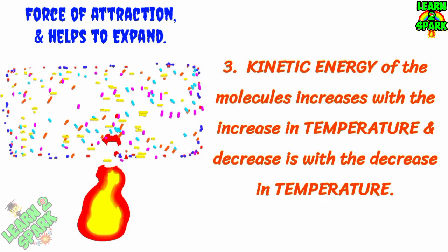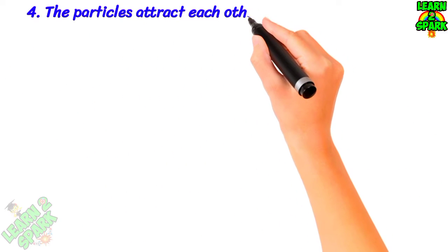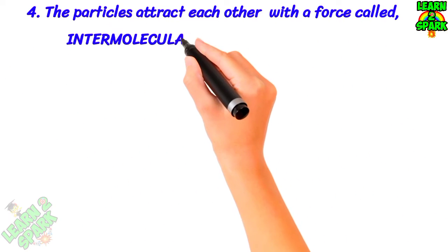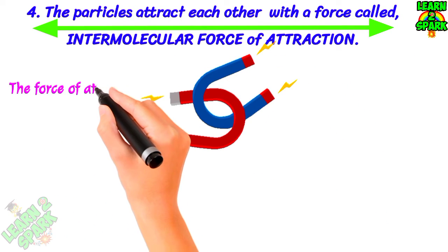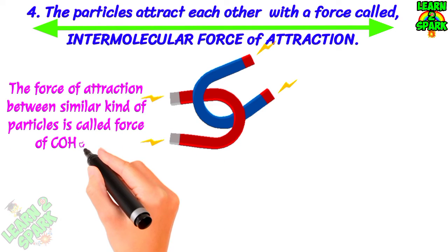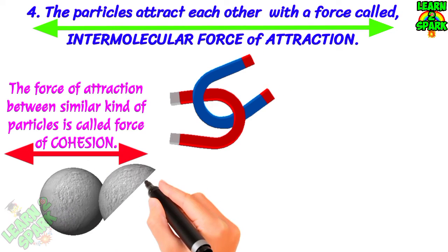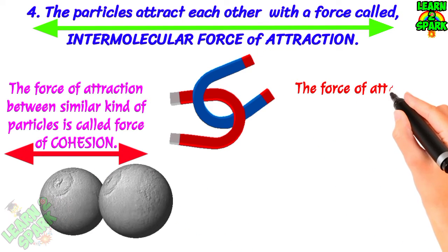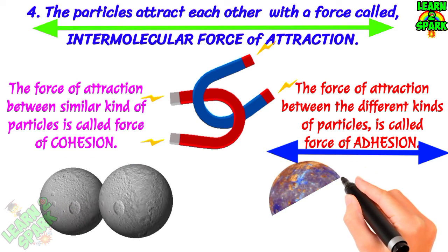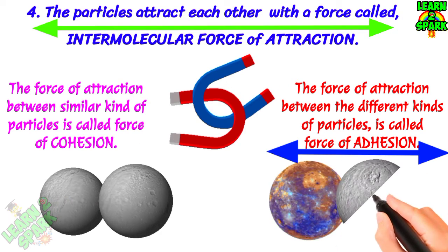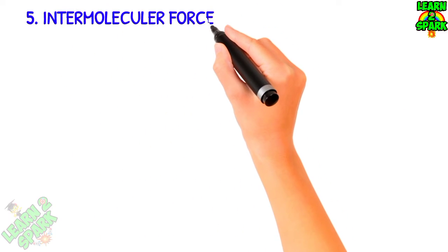Now postulate four: the particles attract each other with a force called intermolecular force of attraction. These attractions are of two types. The force of attraction between similar kinds of particles is called force of cohesion, like in the case of water molecules. The force of attraction between different types of particles is called force of adhesion, like in the case of water molecules and glass.